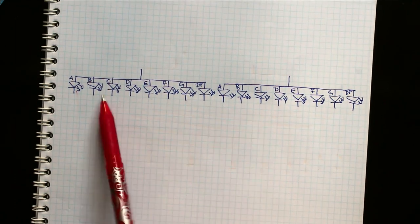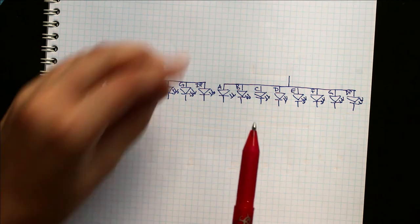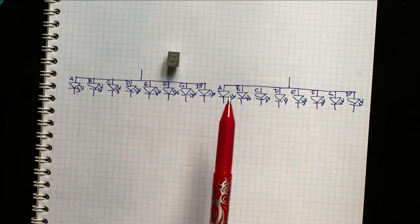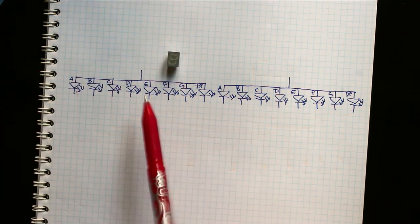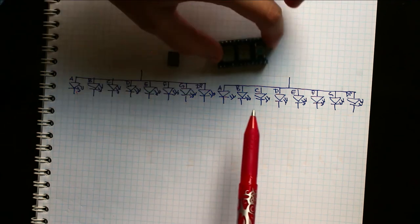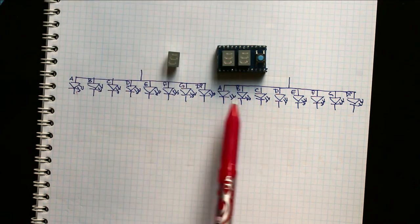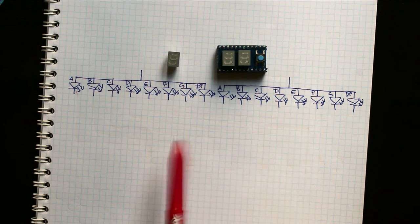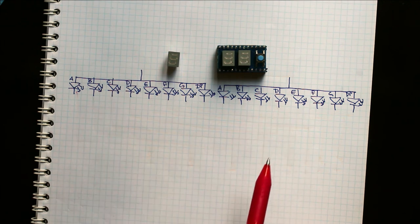Well, you have two of these common anode seven-segment displays that are next to each other. And in your Arduino, you don't really have enough pins, especially for the clock shield, to just have them act independently.